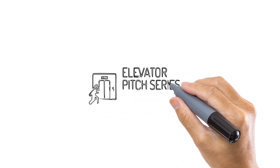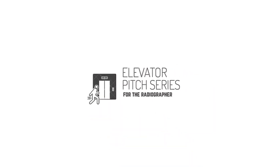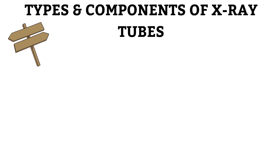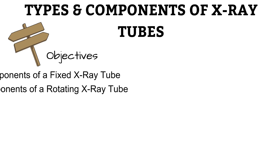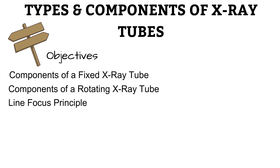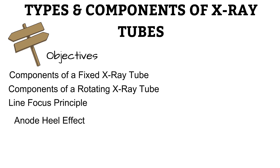Hello, and welcome to Elevator Pitch Series for the Radiographer. I am Michael, and this is the fourth video in the series on radiographic equipment. In this video, we'll be looking at the types and components of X-ray tubes. We'll be looking at the components of a fixed X-ray tube and the same for a rotating X-ray tube. We'll also be finding out what the line focus principle is, and we'll be looking at the anode heel effect.